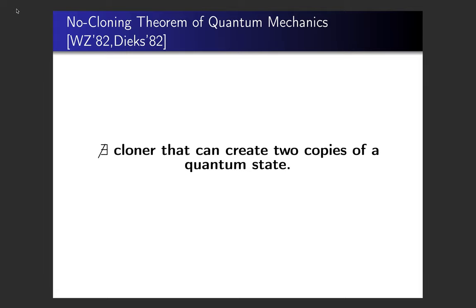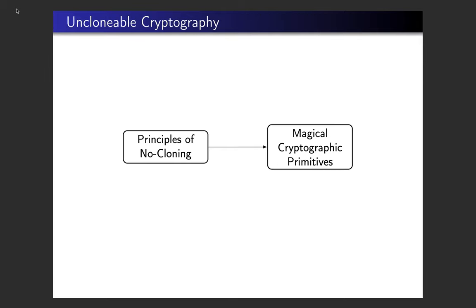The no-cloning theorem of quantum mechanics states that there does not exist a universal cloner that, given an input quantum state, outputs two copies of the same quantum state. In other words, if given an arbitrary quantum state, you will not be able to copy it. While the no-cloning theorem might come across as a limitation, the principle of no-cloning is the basis for many interesting cryptographic primitives.